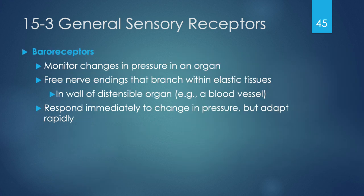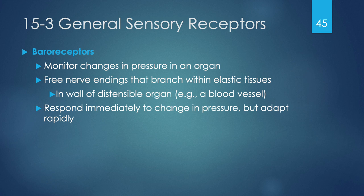Baroreceptors monitor changes in pressure within an organ. These general sensory receptors have free nerve endings branching within elastic tissues and are always present in walls of distensible organs — blood vessels, bladder, and stomach. Think of barometric pressure: the baro part means pressure. Baroreceptors respond immediately to any pressure change but adapt pretty quickly too.